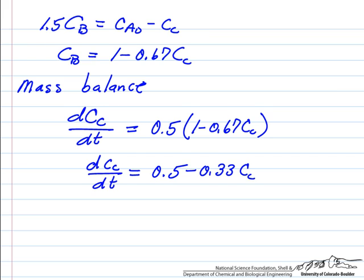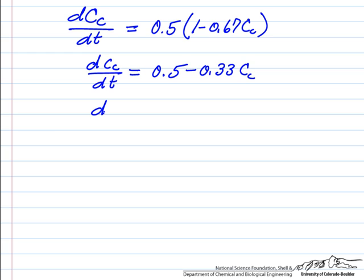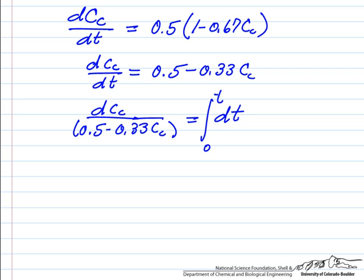And we'll go through the simple integration. Now we integrate from a starting time, we want to know the concentration of C at a later time. The initial concentration of C is 0, so this equation, the initial condition is the concentration of C is 0.